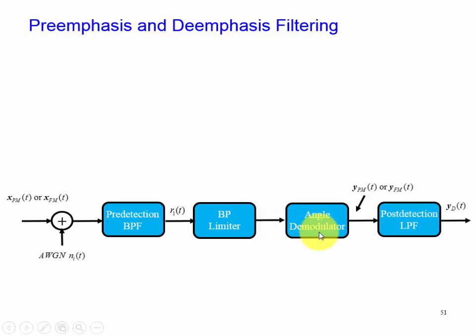We have our angle demodulator and we note that for FM demodulation we use a slope detector, or basically we take the derivative, which introduces parabolic noise at our output. And what we want to do is develop some circuits to help improve the situation.